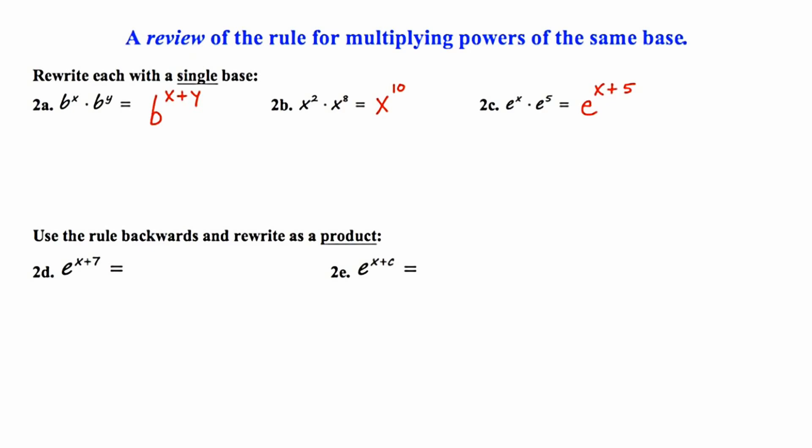In the next two examples, we're going to use the same rule, but this time we're going to apply it in the reverse direction. So the directions say, use the rule backwards and rewrite as a product. So we start with e to the x plus 7. Now this looks very similar to the one that we just did up in 2c. So notice, if we start off with e to a power that is a sum, we can express that as a product. We have e to the x plus 7, so this could be thought of as e to the x times e to the seventh.